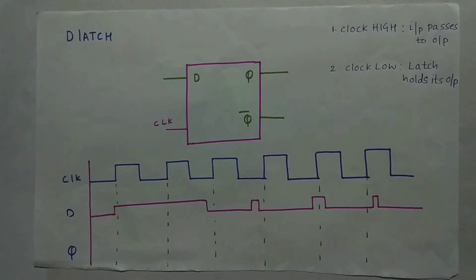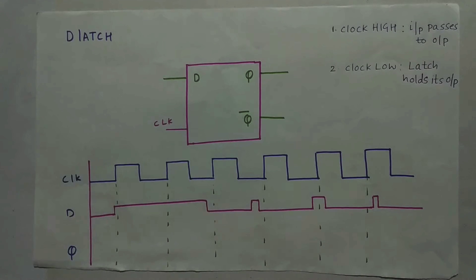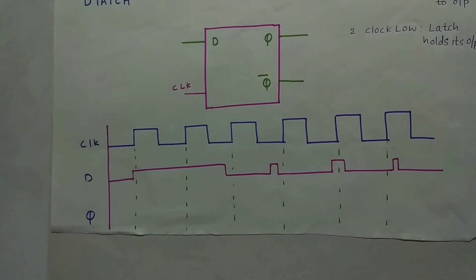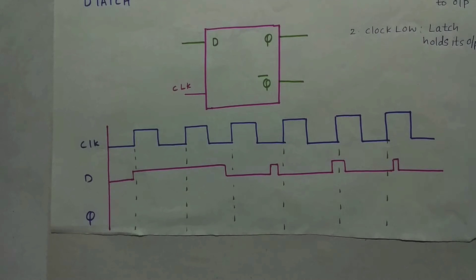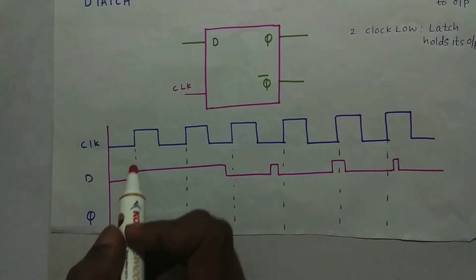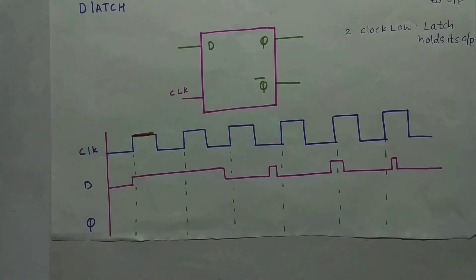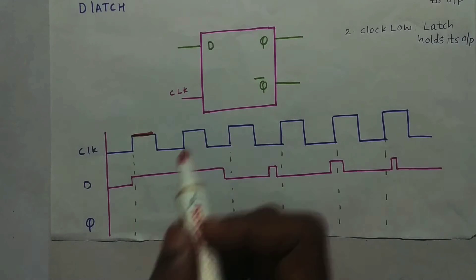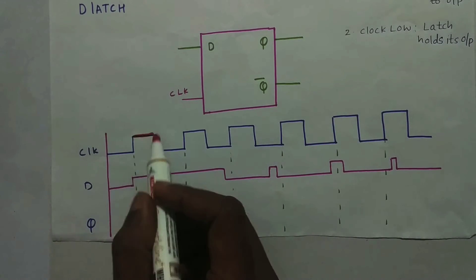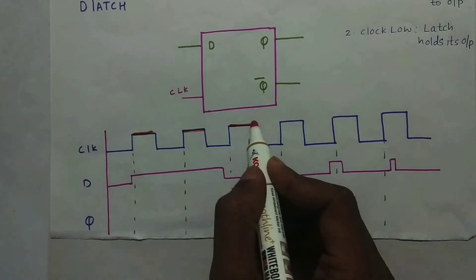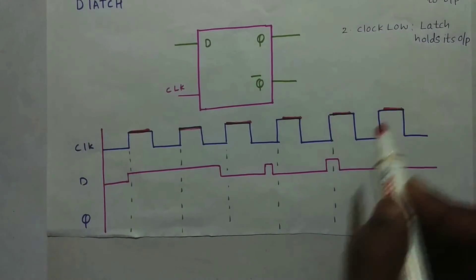Now let us look at the timing diagram. As you can see, there's a clock with a 50% duty cycle, and this is the input being given to the latch. I'm stressing on 'level sensitive' — you need to understand that a latch is level sensitive, not edge triggered. Level means this region here. As you can see, I'm drawing with red — that is the level. This is a positive level, so it will be turned on in these high regions of the clock.